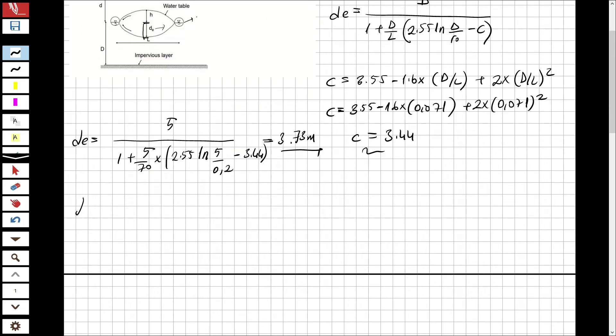For h value we are going to use the formulation: l square equals 4k multiplied by d_e plus h square minus d_e square, all over q.